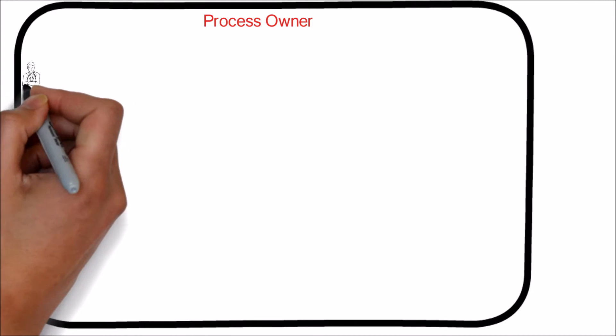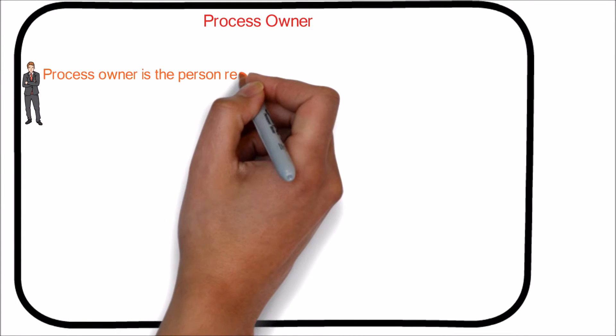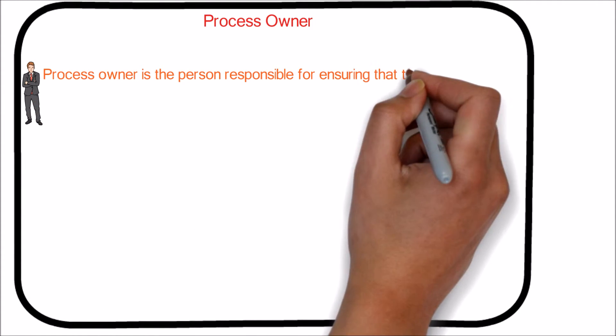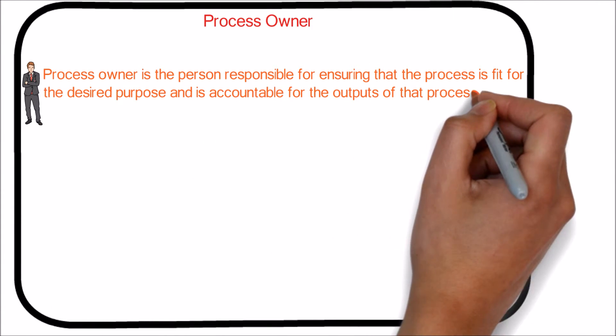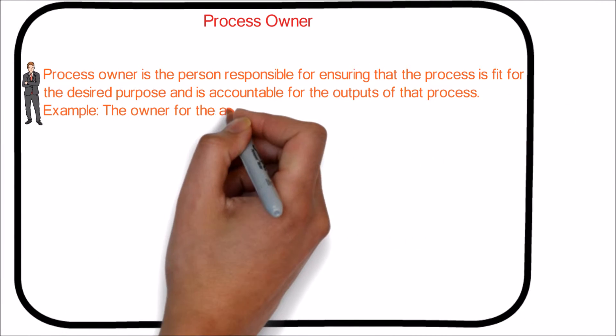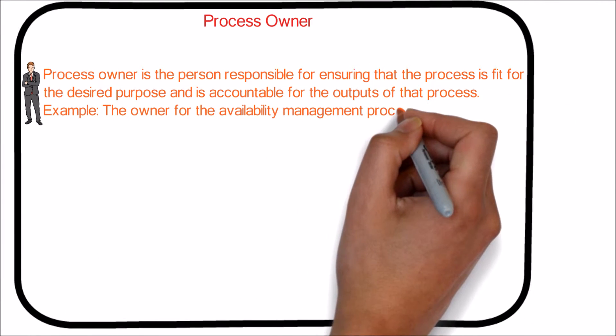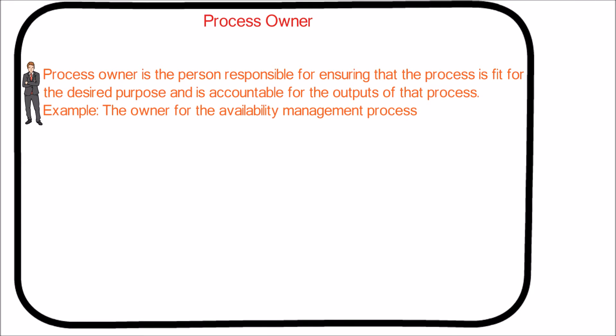Now we will see about the role of process owner. A process owner is the person responsible for ensuring that the process is fit for the desired purpose and is accountable for the outputs of that process. For example, the owner for the availability management process.